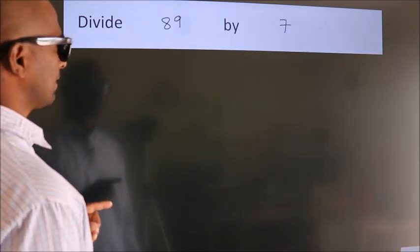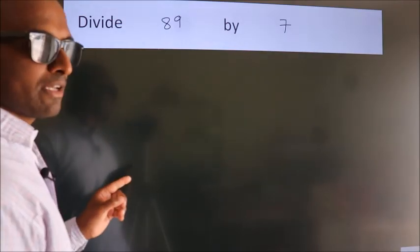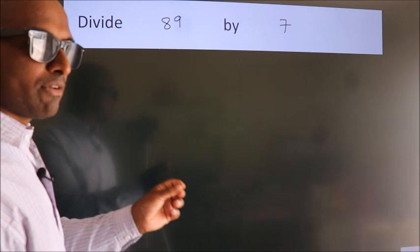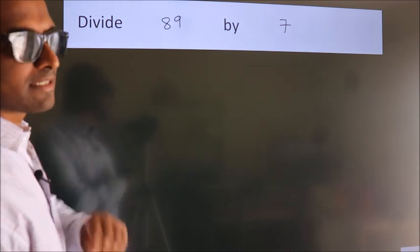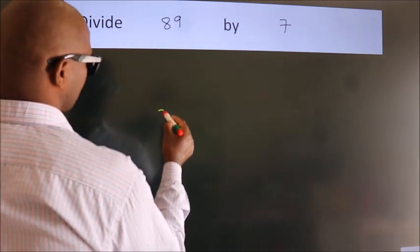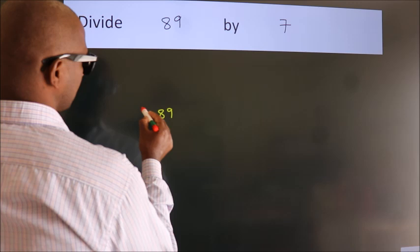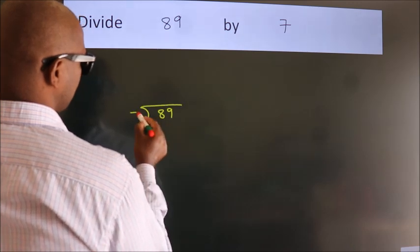Divide 89 by 7. To do this division, we should frame it in this way. 89 here, 7 here.